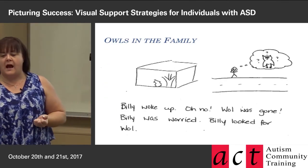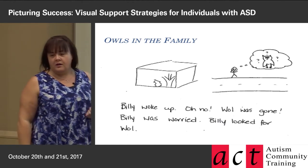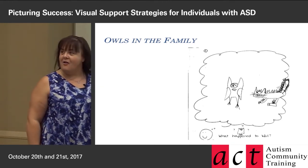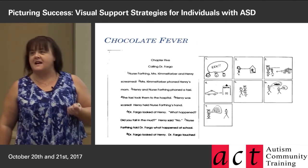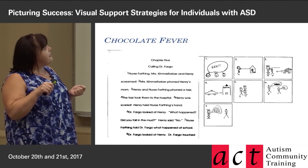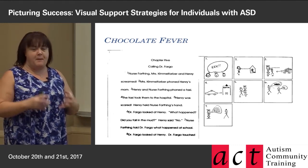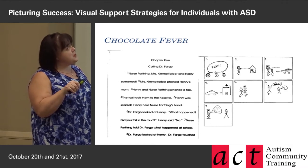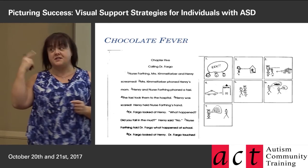The second book that year was Owls in the Family. The text read things like: Billy woke up — Wool, the owl, was gone — Billy was worried, Billy looked for Wool. I asked her what happened to him and she figured a cat got him. The next novel was Chocolate Fever, and by then the text had increased significantly — chapter 5 had simplified sentences but much more text. I put a number before each sentence related to that part of the comic strip so she could see the connections — these are the pictures she should start making in her head when reading.